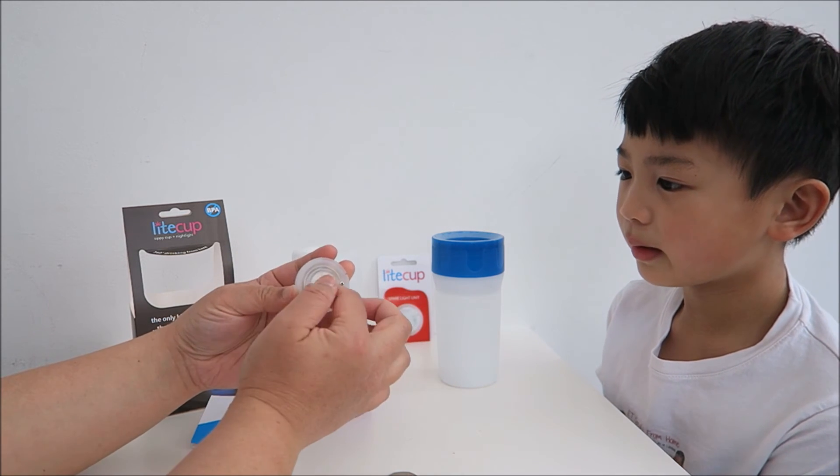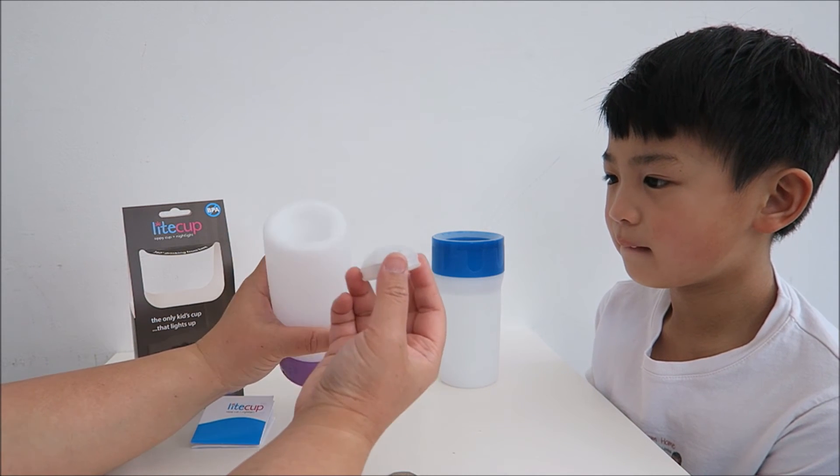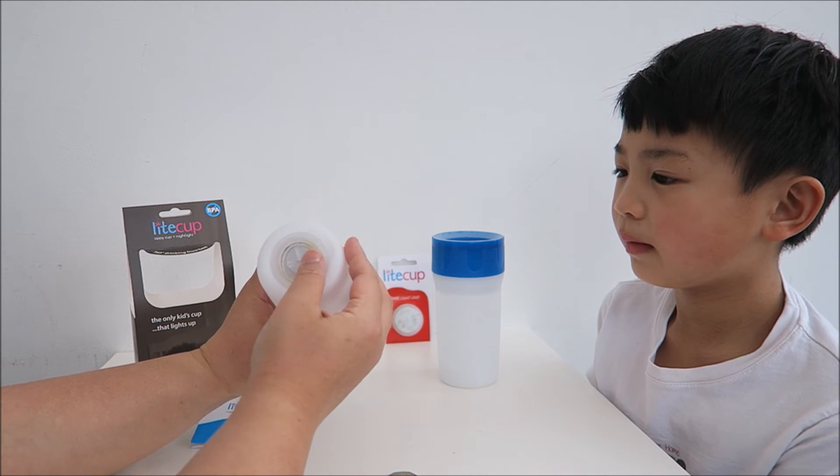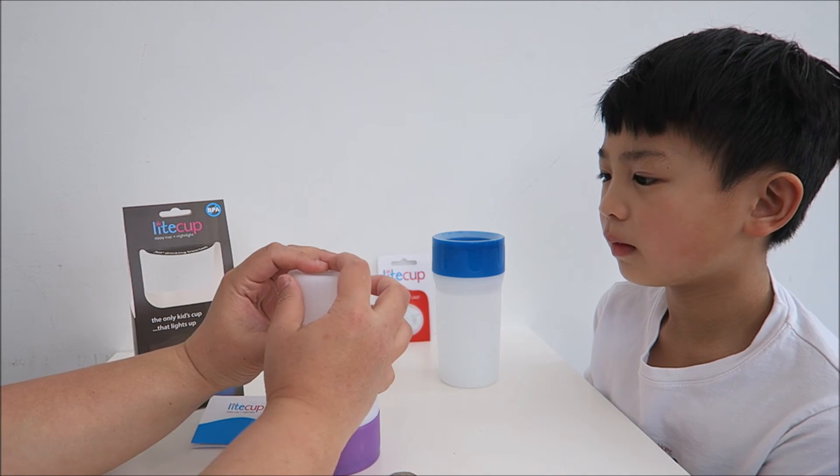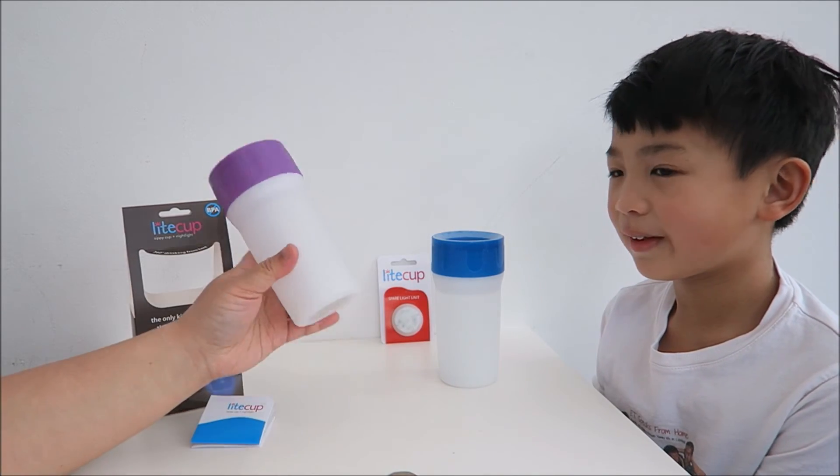So you just need to take out the unit, take out everything and then change the batteries. And it's quite easy to pop it in and pop it out. So you can see here, if you align it together, you just push it in and it will click. And that secures it.